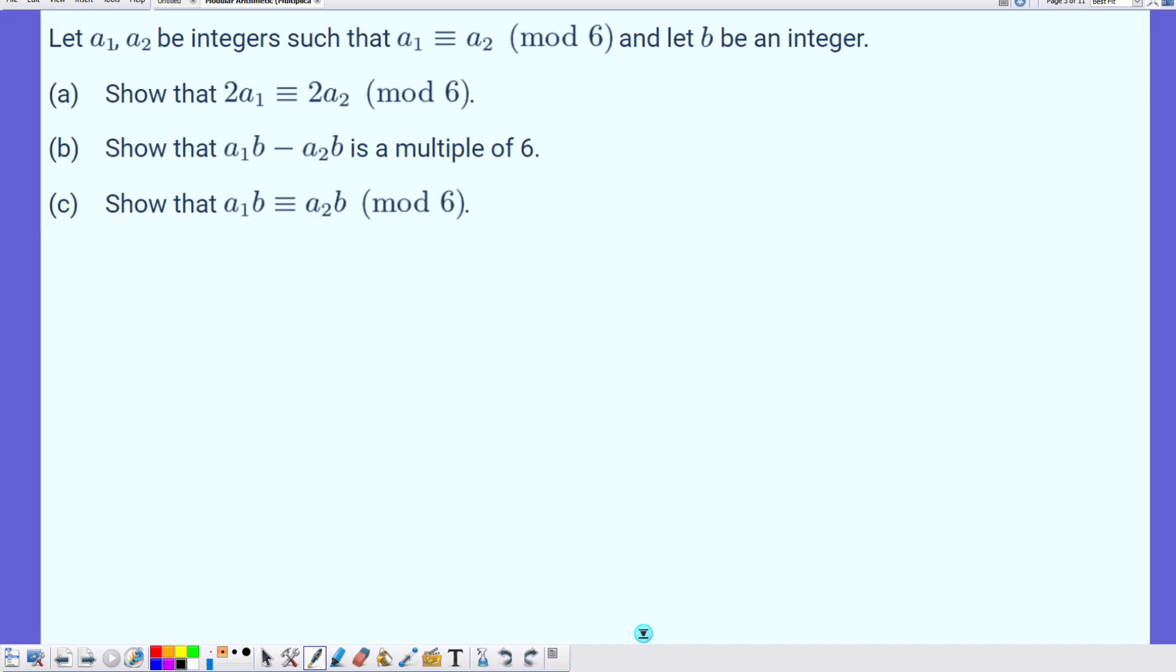Part A wants us to show that 2 times A1 is congruent to 2 times A2 mod 6. Part B states that A1 times B minus A2 times B is a multiple of 6. And finally Part C asks us to show that A1 times B is congruent to A2 times B.